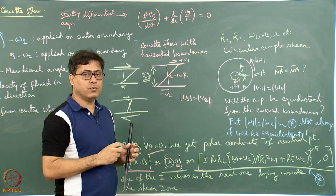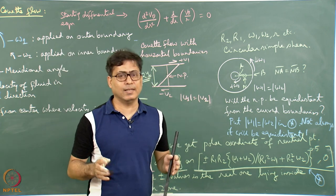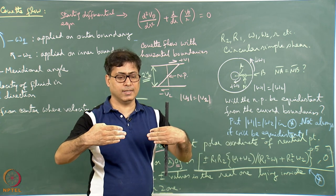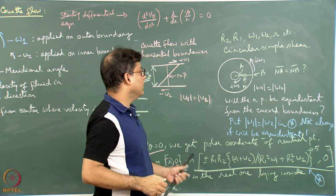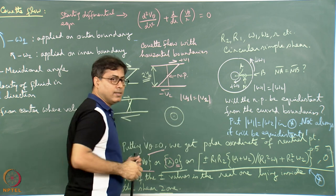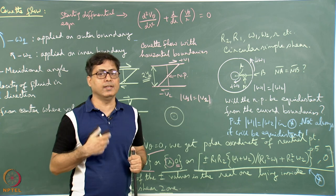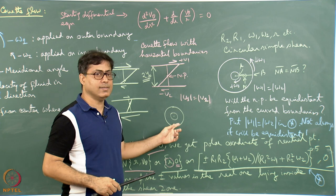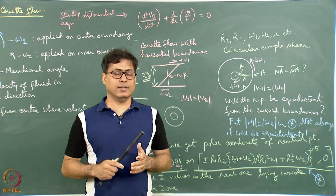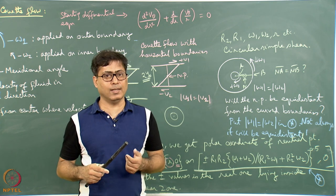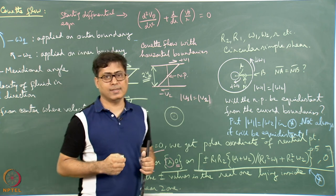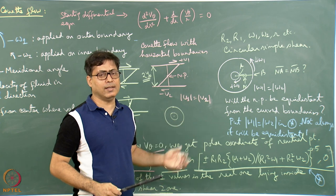Taylor-Couette flow is useful in structural geology laboratories where space is limited. A parallel boundary shear apparatus requires a very long table and significant space. Two concentric rotating cylinders allow very high strain to be produced over a small experimental area. However, most structural geology labs use parallel boundary apparatus; Taylor-Couette flow facilities are rare and are typically found in mechanical and civil engineering departments.